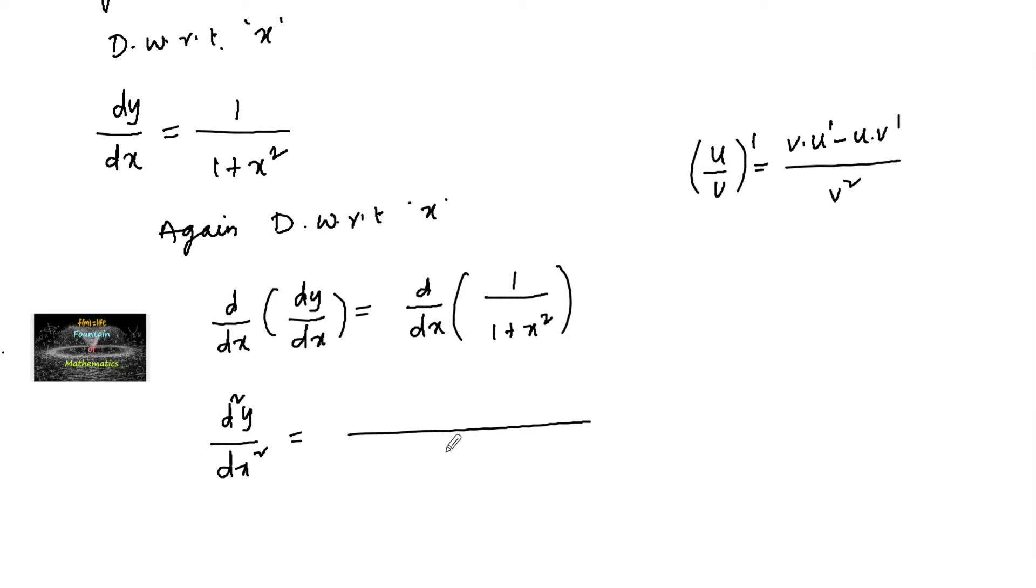So we can write here 1 plus x square whole square, and here 1 plus x square into differentiation of 1 that's 0 minus 1 into differentiation of 1 plus x square which is 0 plus 2x.